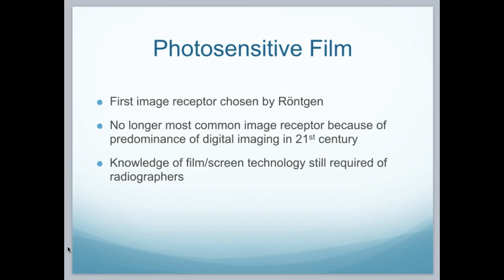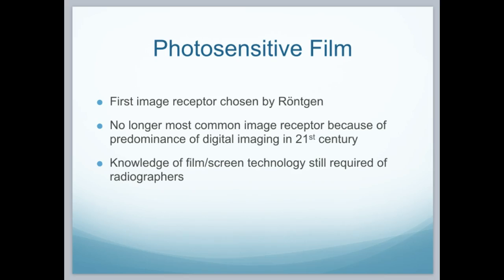Students still really need to understand film screen technology. It just makes understanding contrast and density so much easier, and different image properties like that. Going back to the original base Röntgen was dealing with, he used glass. He would take this glass and cut it with his emulsion, his reactive phosphorescent emulsion. The problem with this is that glass will break, so they had to come up with something a little bit more durable.